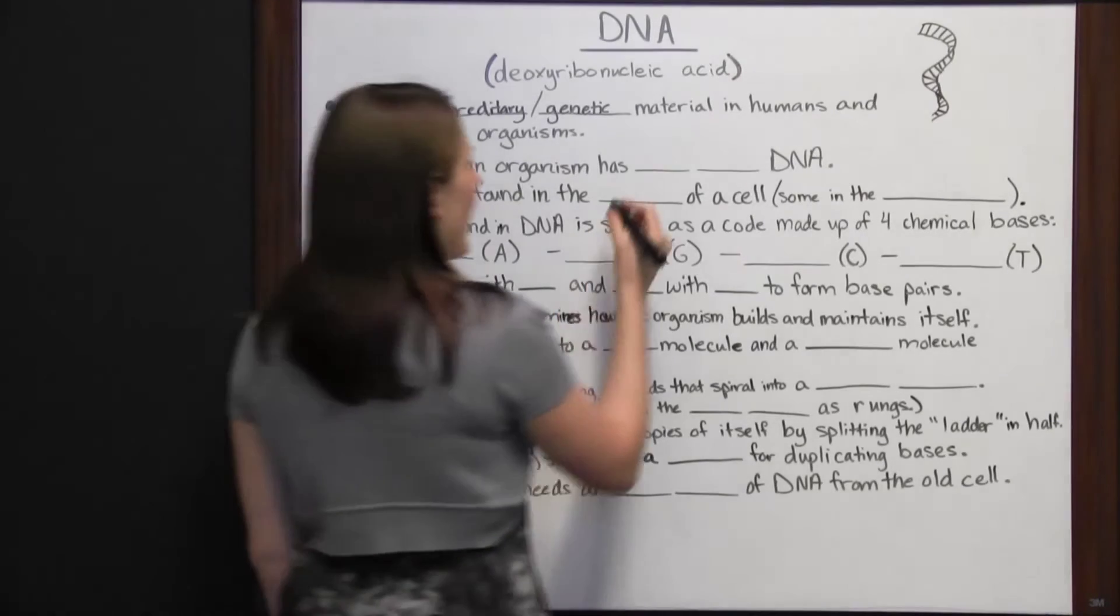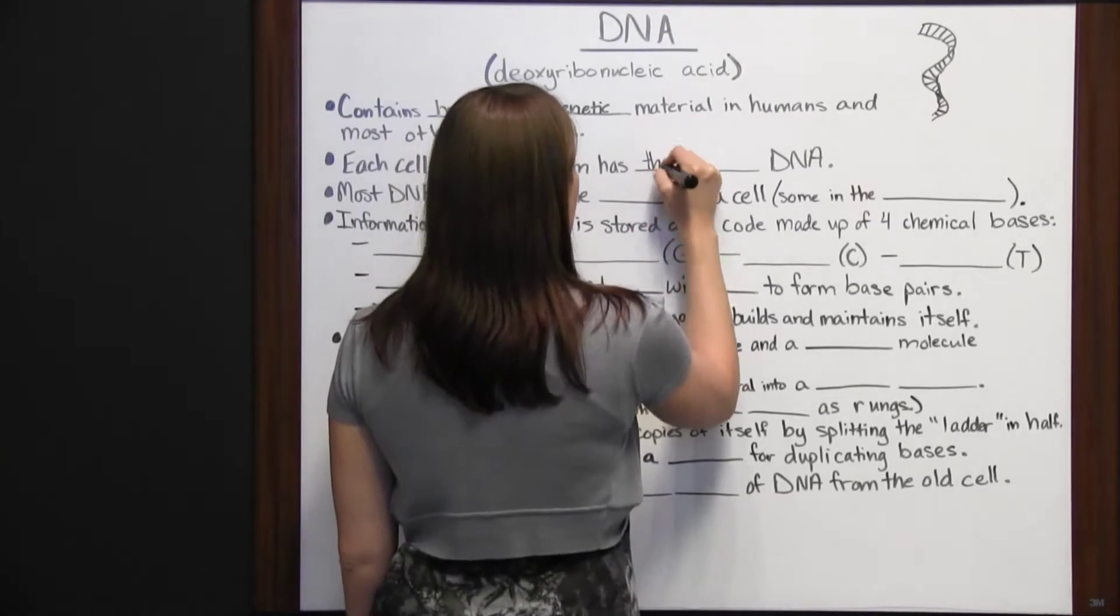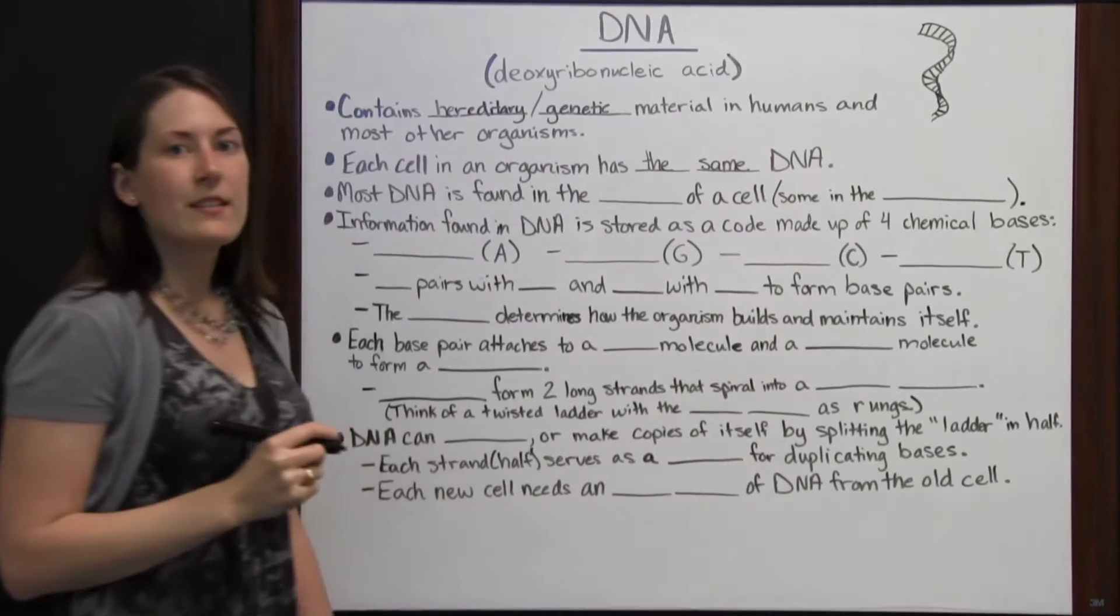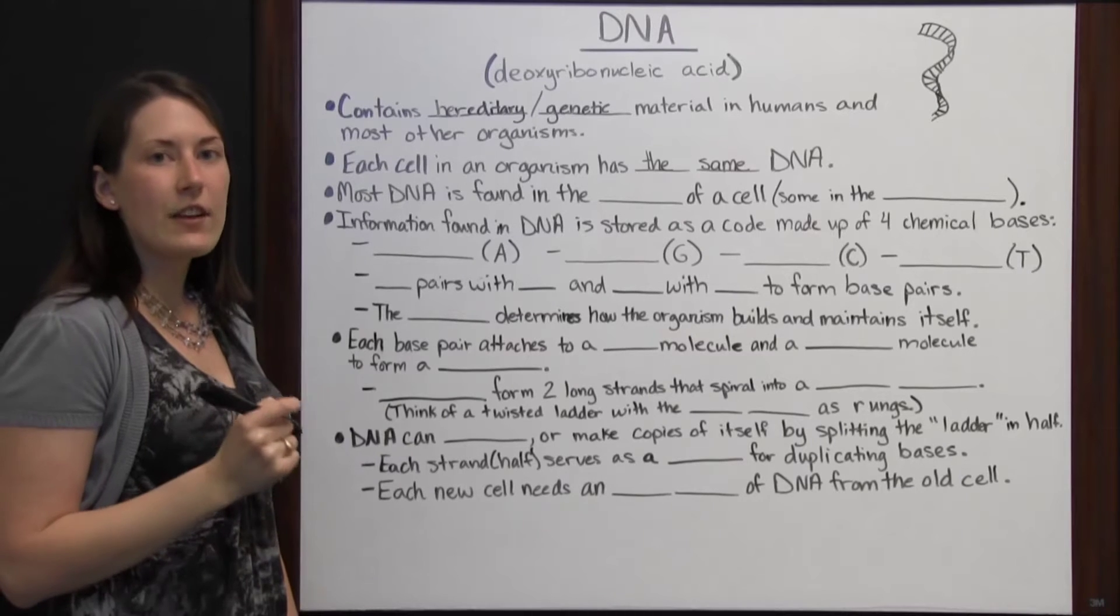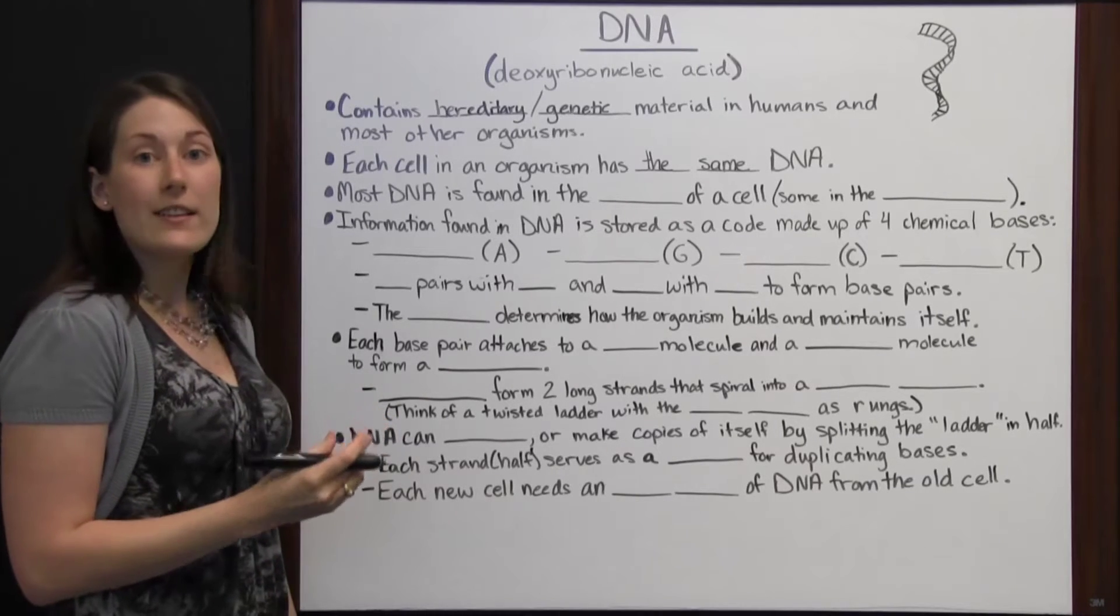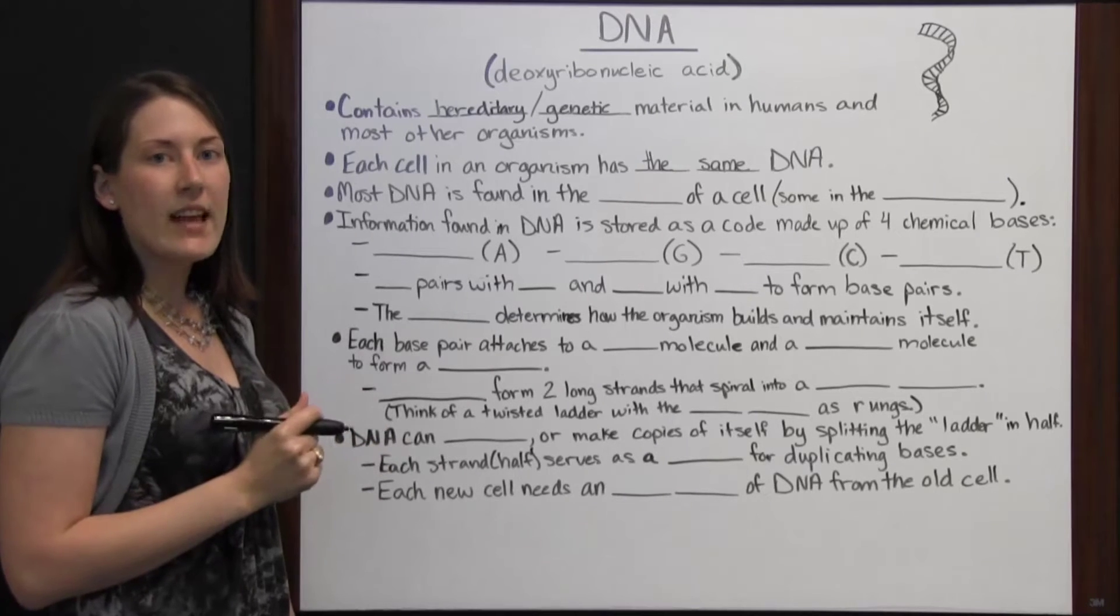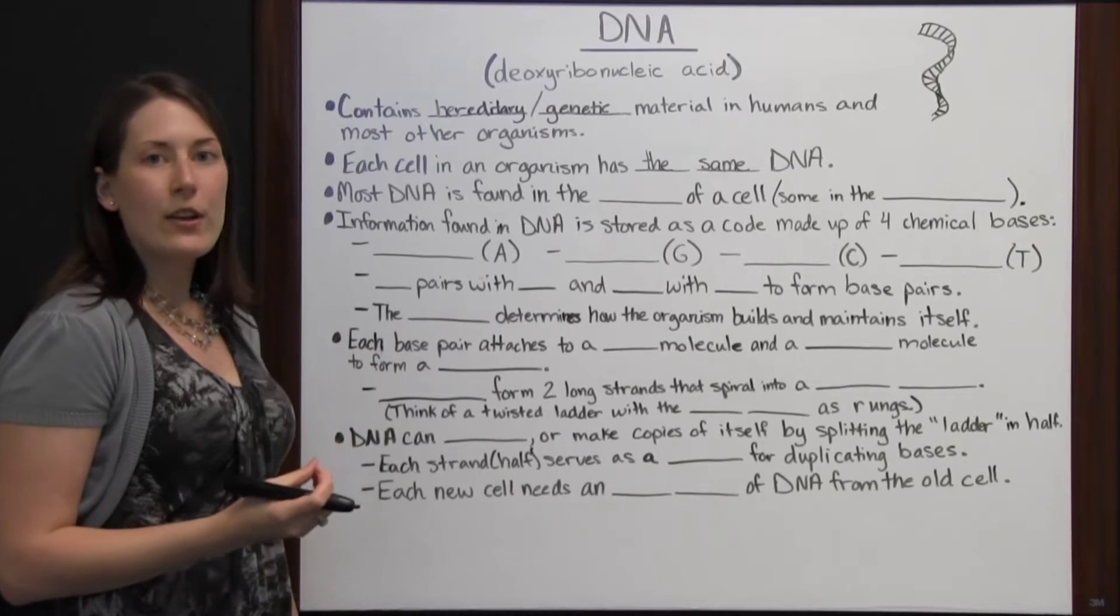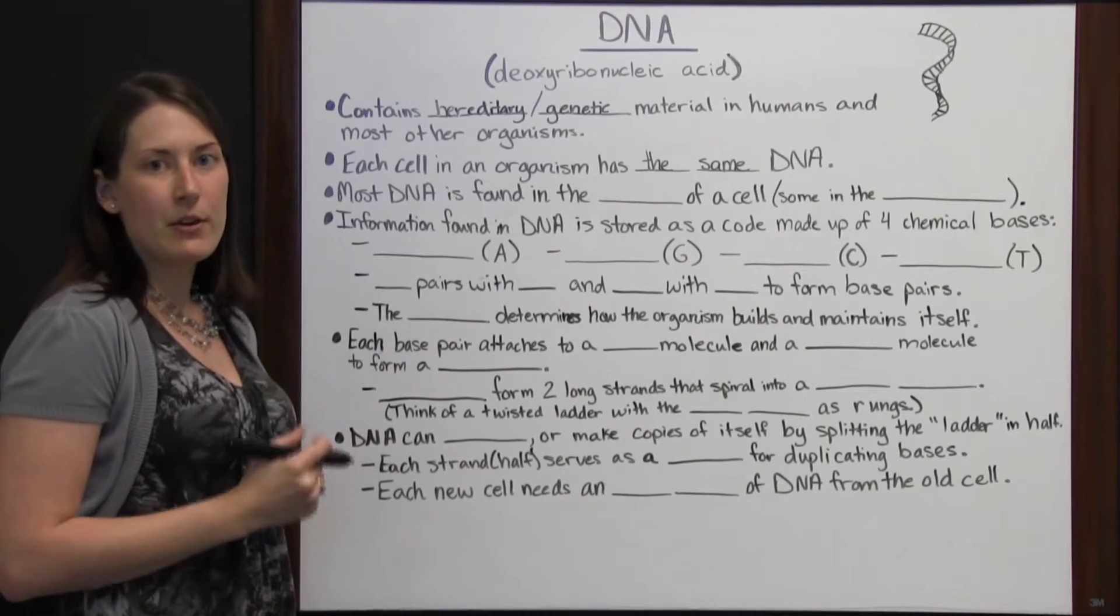Each cell in an organism has the same DNA. If someone were to get a piece of your hair and a fingernail and a piece of skin and look at it very closely and look at the DNA, the DNA in all three would be the same and it would let whoever was looking at this know that all three of those articles came from the same person.